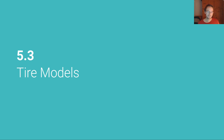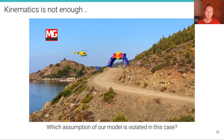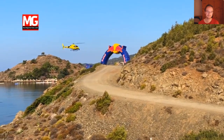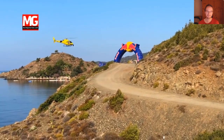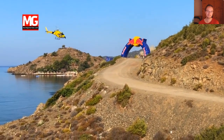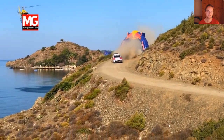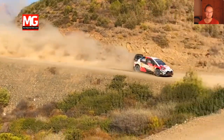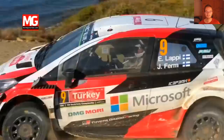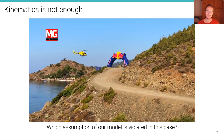This unit is on tire models. We must understand tires in order to understand the relationship between forces applied on the wheels of a vehicle and the slip that's happening at the wheels. Let me motivate this by showing you this little video here. It's evident from this video that this vehicle is clearly not following the kinematic bicycle model, so the kinematic bicycle model is not enough.